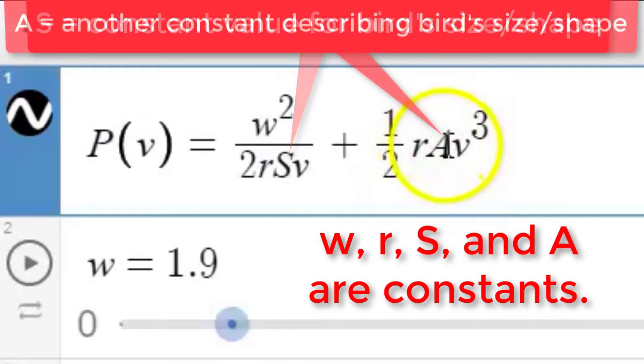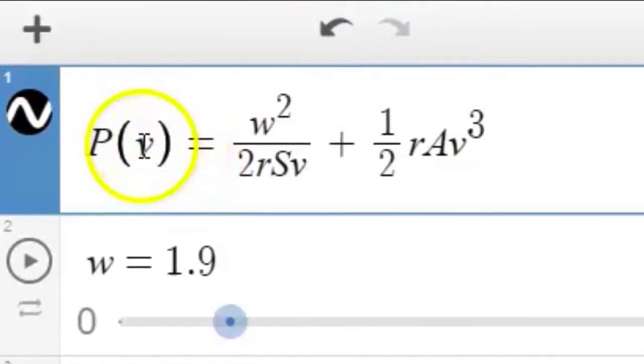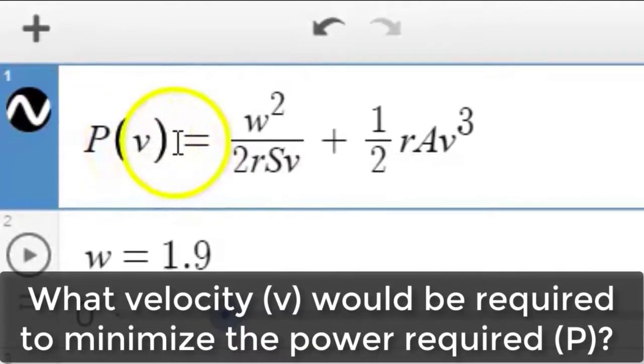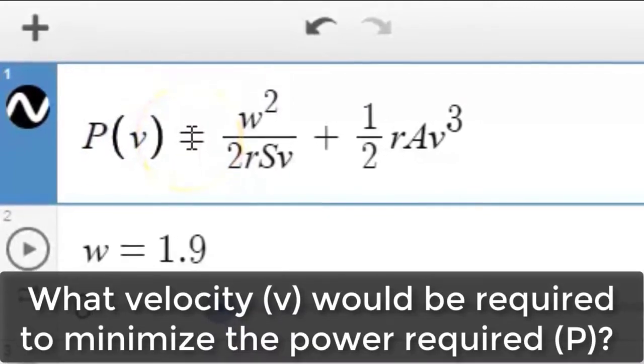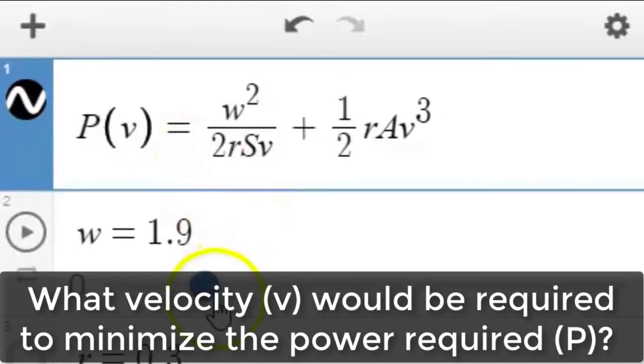And then also A. A is another positive constant that is used to describe a particular bird's size and shape. So those are all the variables that we have going on. And what we're interested in is under what conditions, under what velocity, would a bird have to fly in order to minimize the power required to maintain flight for these different constants.